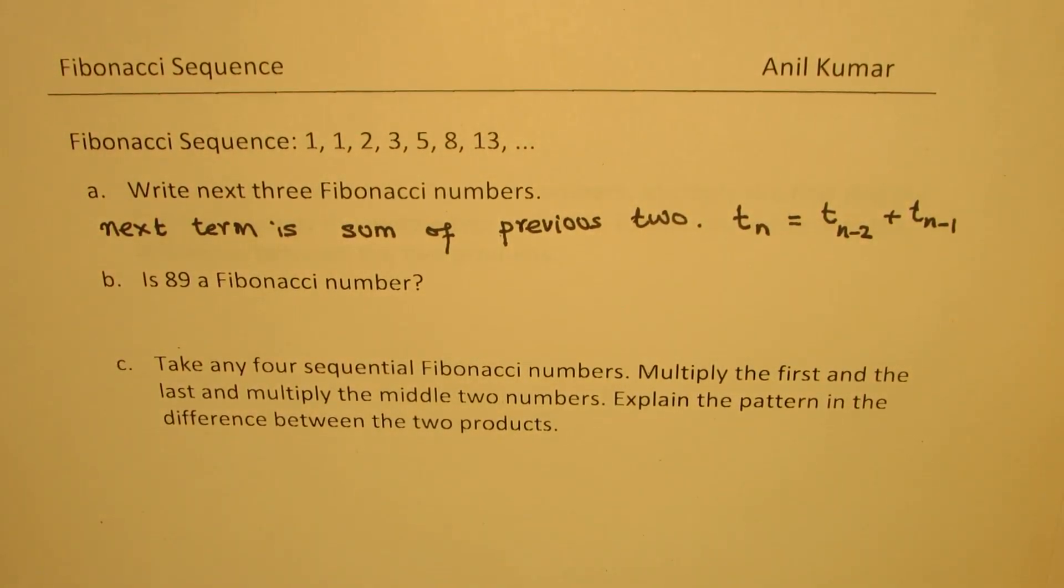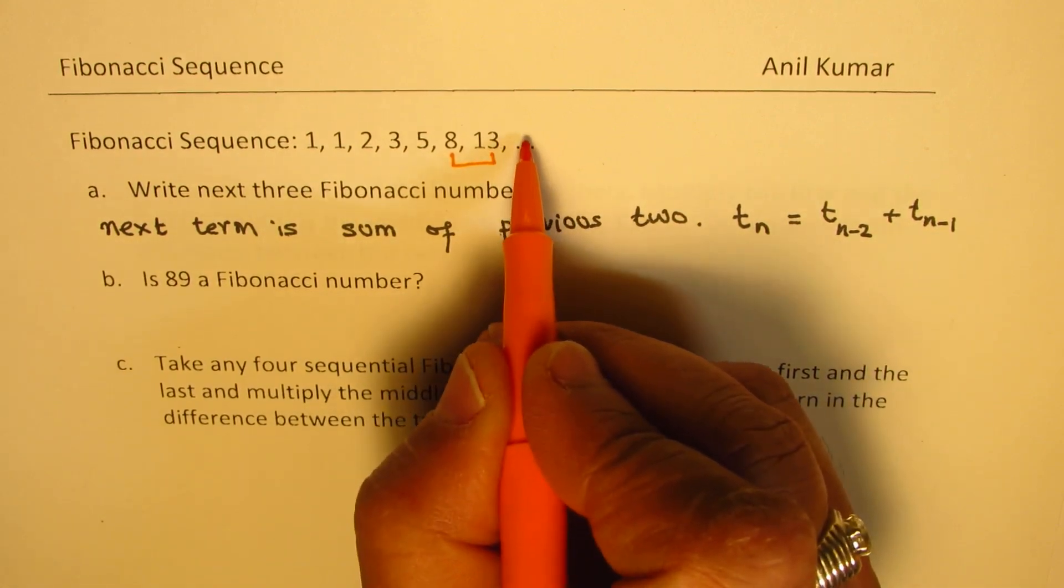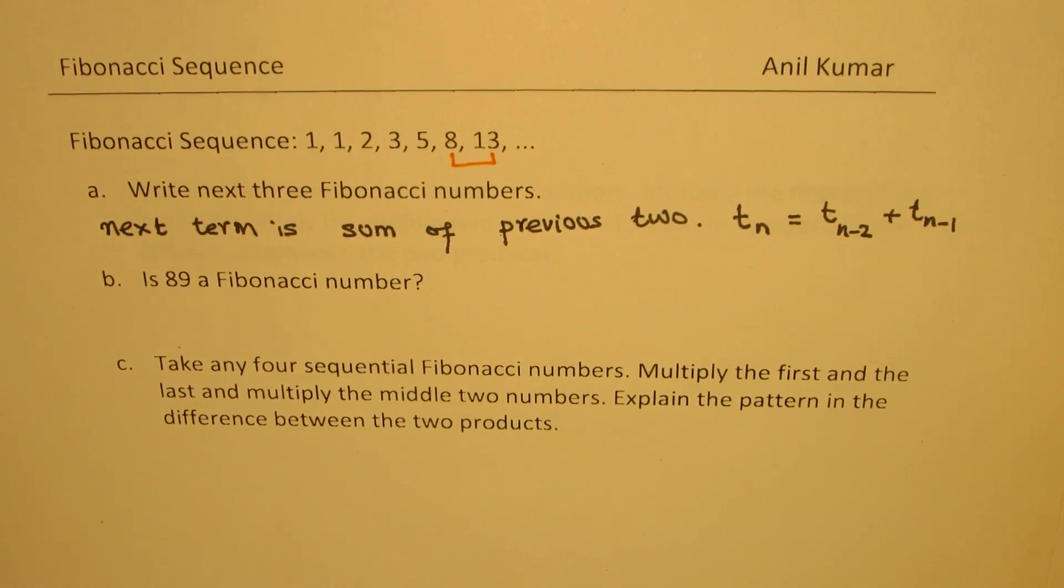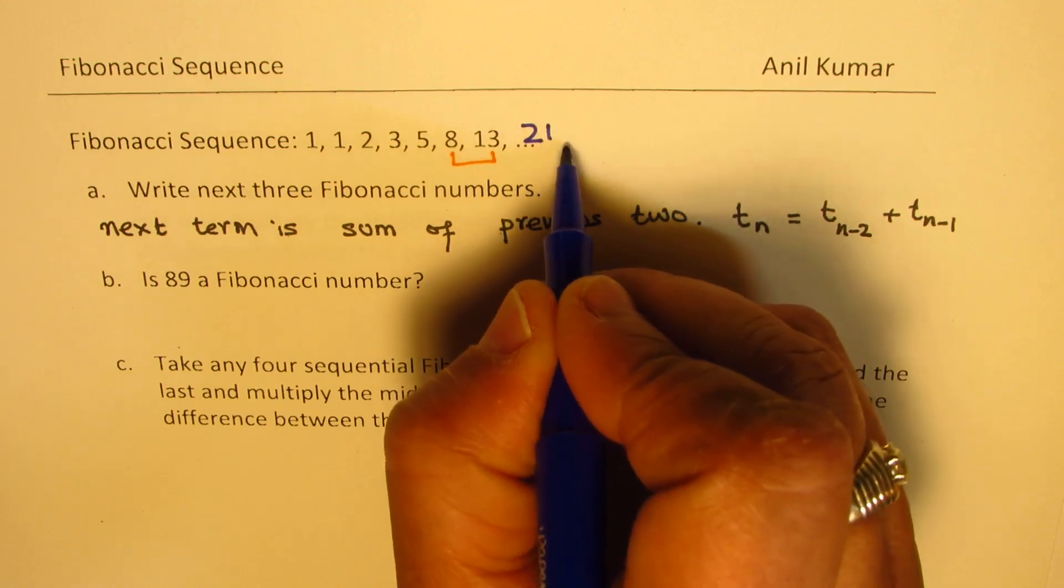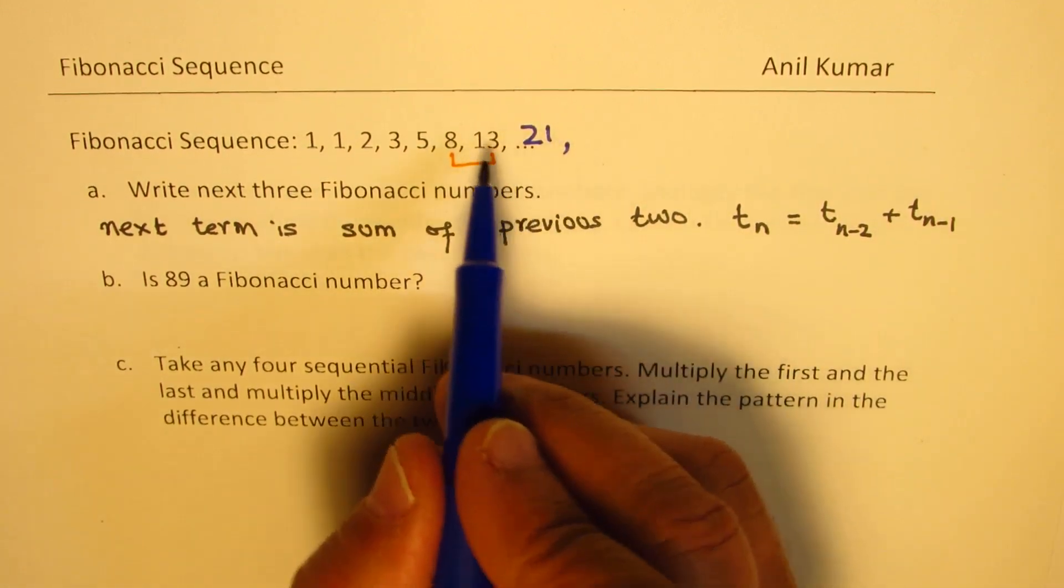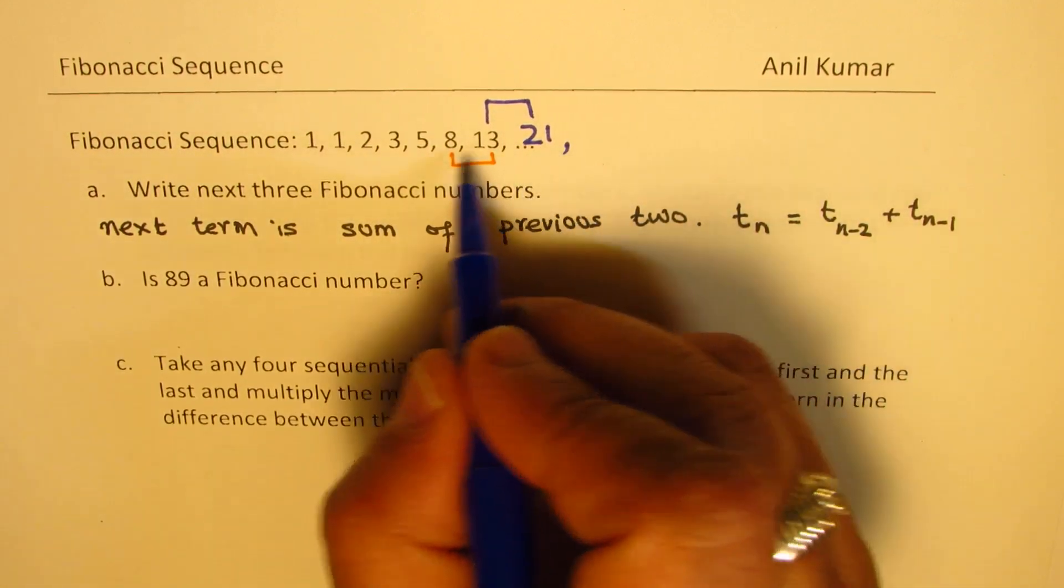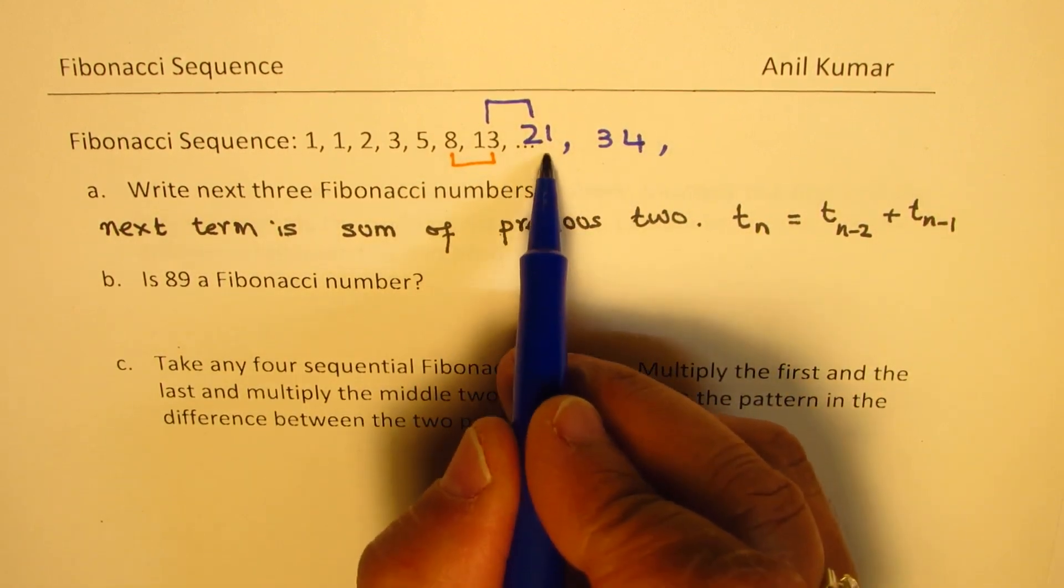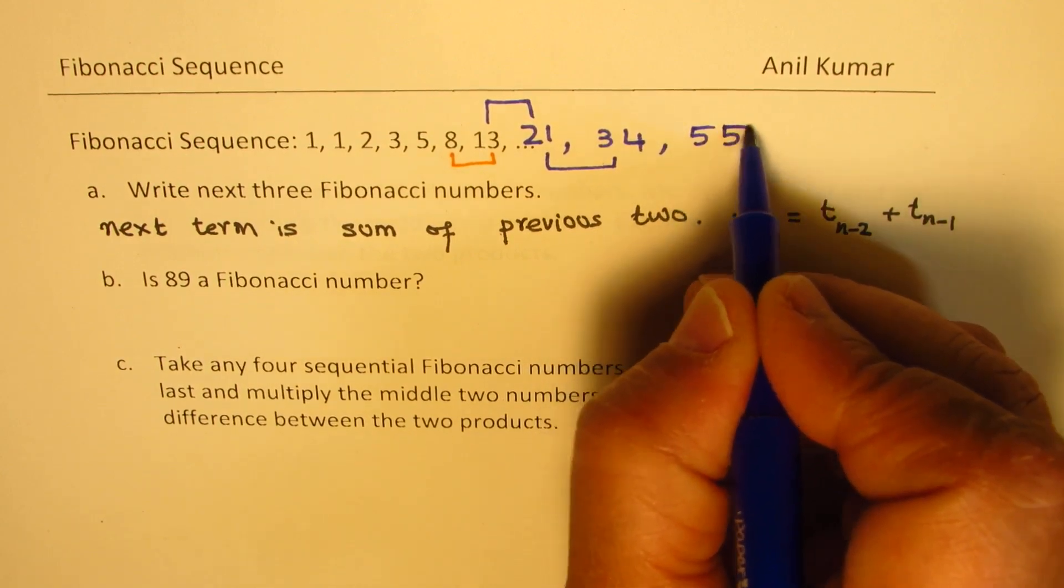So that is how we get the next term. If I have to get the next term here, we add these two to get the next number. When you add 8 to 13, you get 21. To get the next term, we'll add 13 and 21, so we get 34. And now, we'll add 21 to 34, so we get 55.